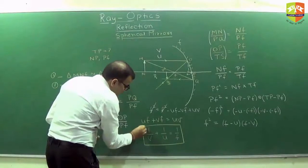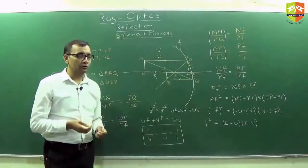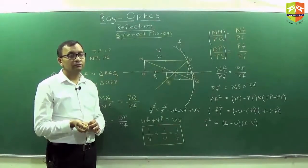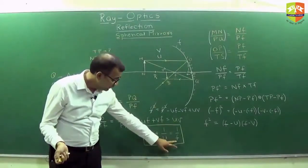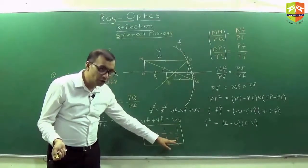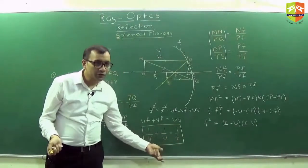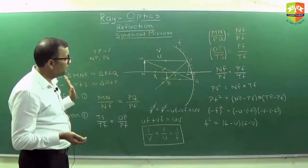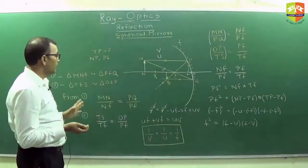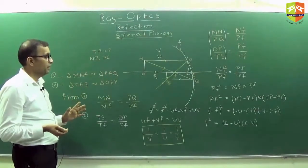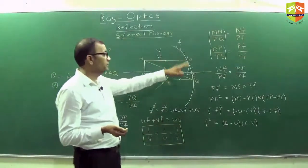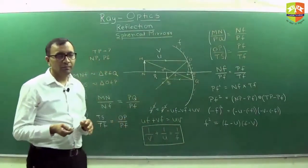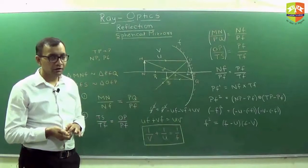This mirror formula is valid for all mirrors, including plane mirrors. For a plane mirror, what is the focal length? Infinity. When you put f equal to infinity, the 1/f term becomes zero, so you get v = −u — which is how it should be. There are also approximations taken here: small aperture, and R = 2f.